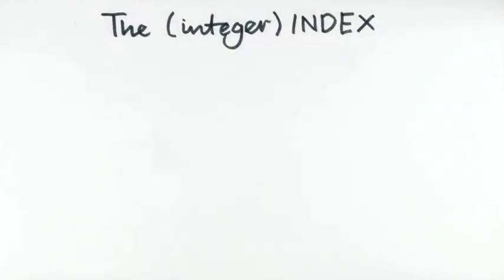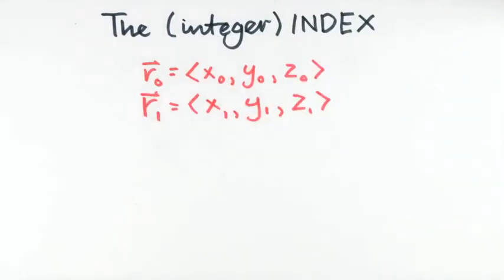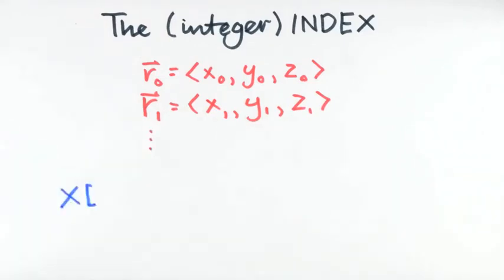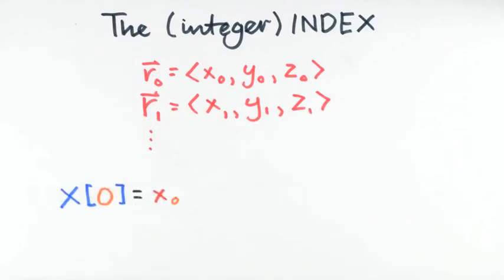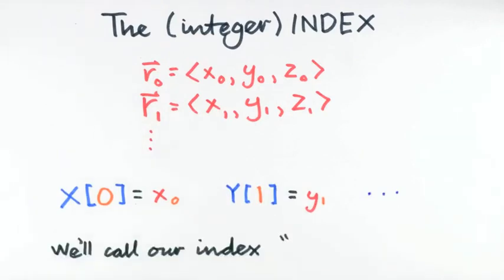A particular data point can be accessed using an integer index. You can think of the index as playing the same role as the subscript for position vectors, r0, r1, r2, etc. So, for example, the x component of r0 is capital X0. The y component for r1 is capital Y1, and so forth. We will use a variable for the index, which we will call here IDX. Then we will change that as we systematically calculate motion quantities.